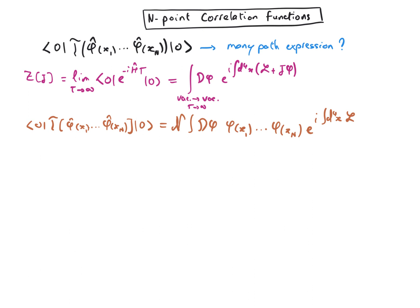The endpoint correlation function involves some field operators expressed at some point of space time. But now in the many-path approach, these operators become just simple classical fields, phi of x1, phi of x10, etc. And because these are classical fields, they obviously commute. So we don't need the time-ordering operators anymore, because it doesn't matter which one comes first in time.